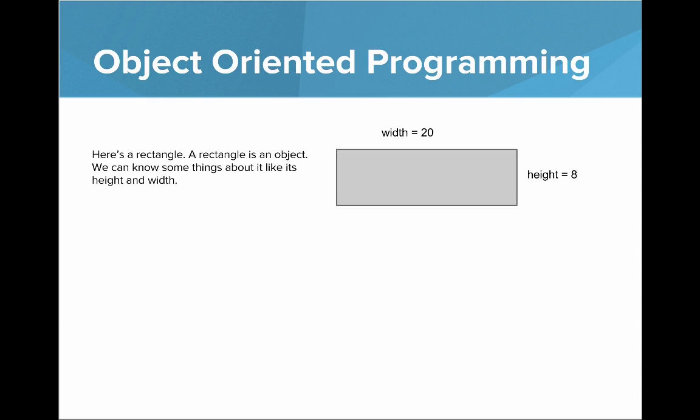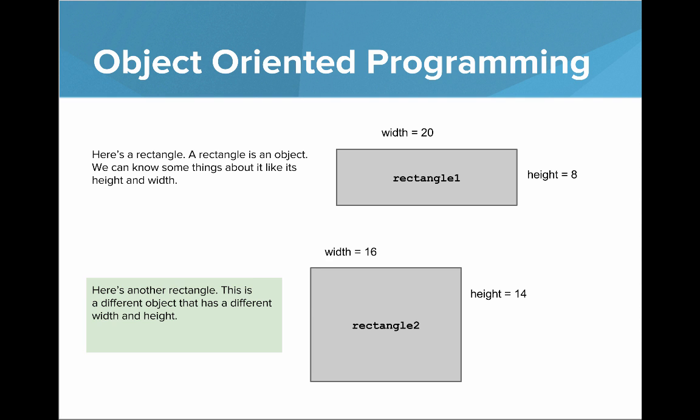So to start off in thinking about object-oriented programming, we have a rectangle here. A rectangle is an object, and we can know some things about it like its height and its width. So here's a rectangle with width of 20 and a height of 8. And here's another rectangle. This is also an object. It's a different object and it has a different width and a different height.